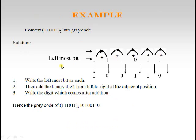One more example: write the leftmost bit as-is. This bit is added with the adjacent bit giving sum 0 carry 1; carry added with adjacent bit gives sum 0; then 0+1=1 carry 0; and 0+1=1. This is how we convert a given binary number into Gray code.